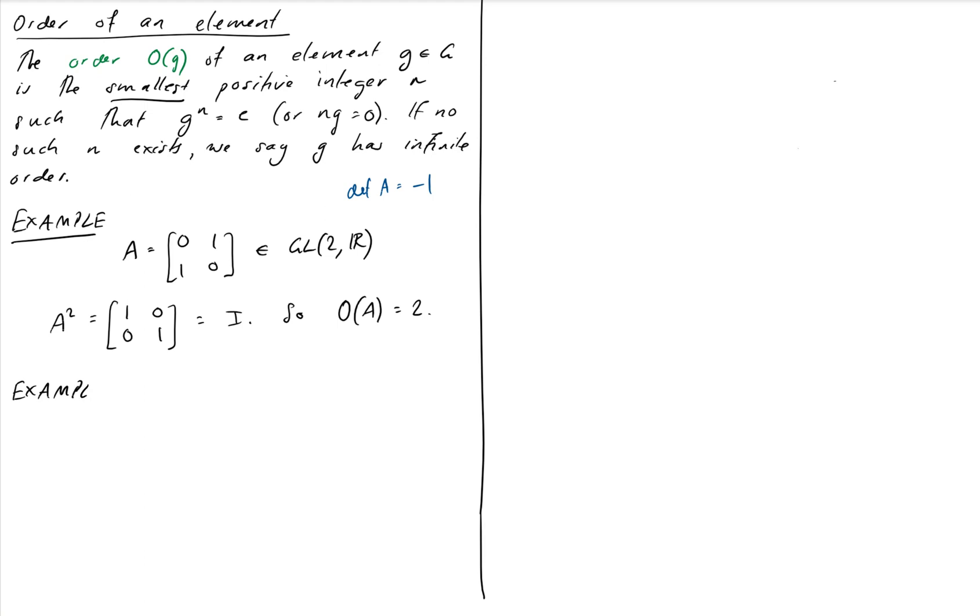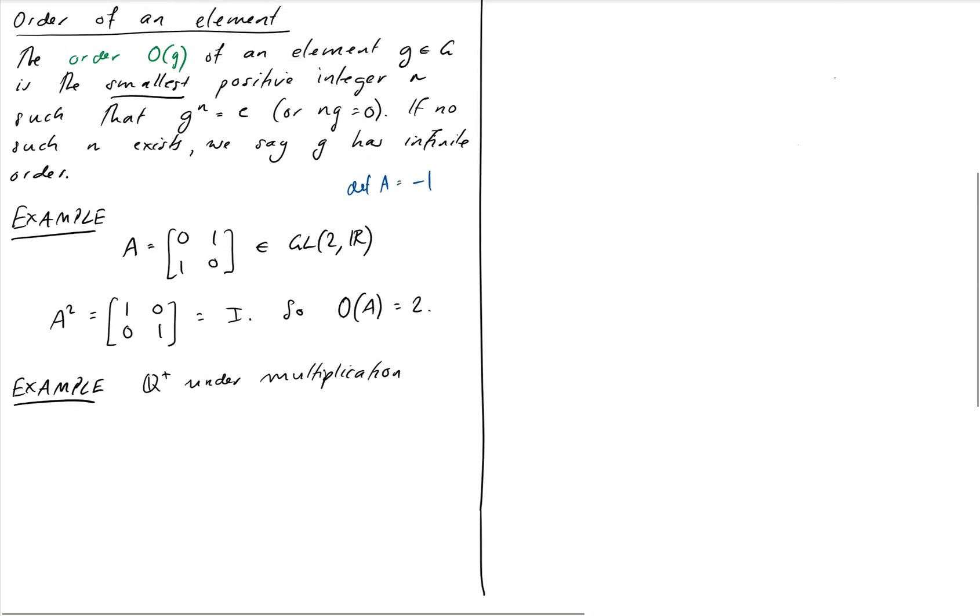For our second example, let's now go to the positive rationals under multiplication, Q+ under multiplication. So these are all the positive rational numbers. Remember, rational numbers are numbers that can be formed as fractions of integers. So we're going to look at the order of every single element in Q+. Let A be an element of Q+. It's going to be a positive number, greater than 0, and rational.